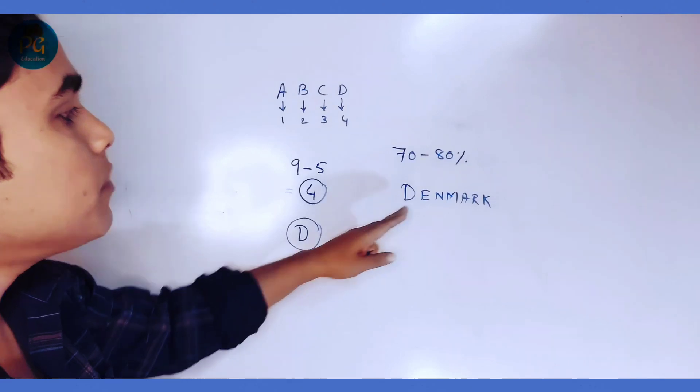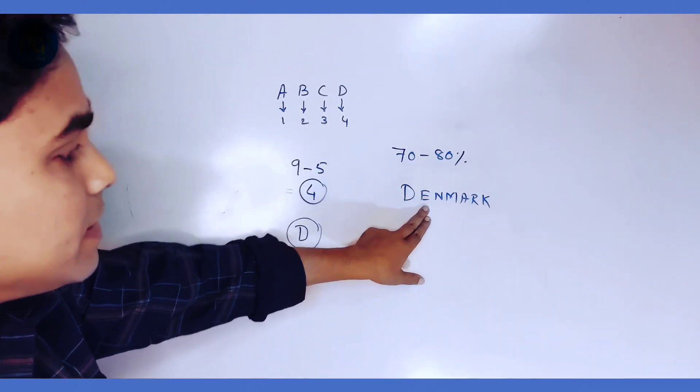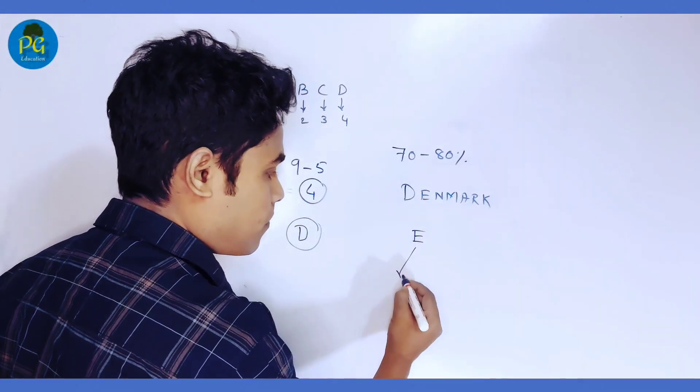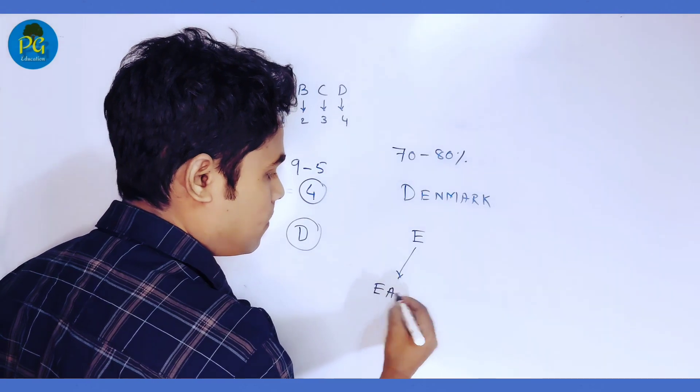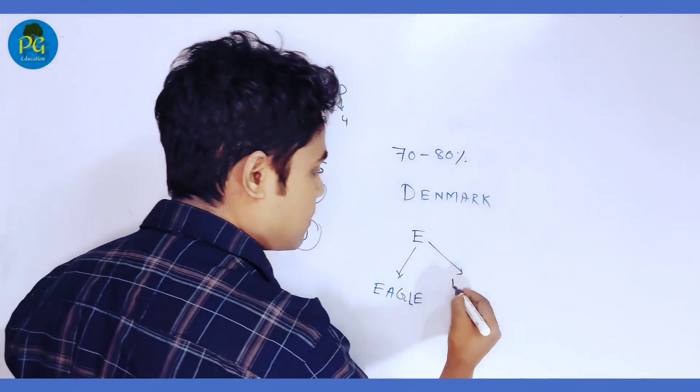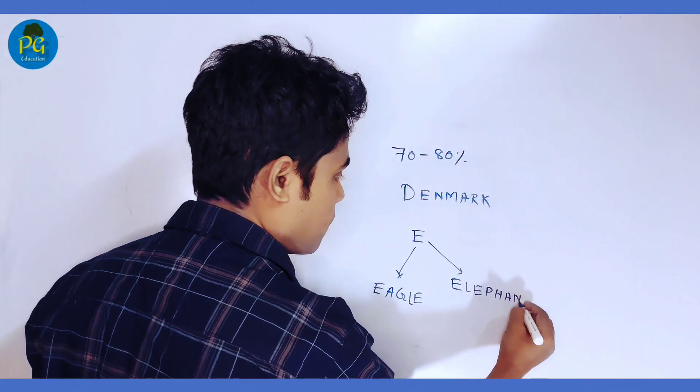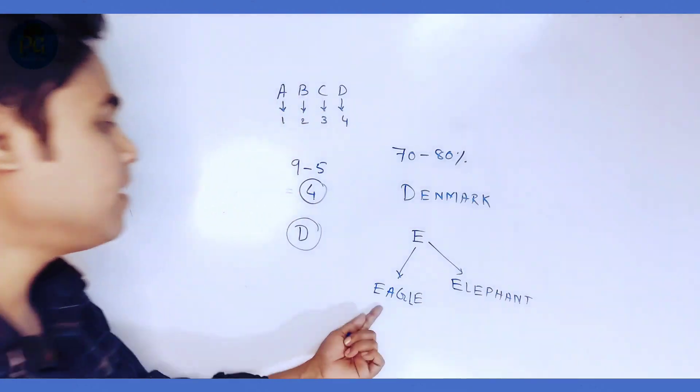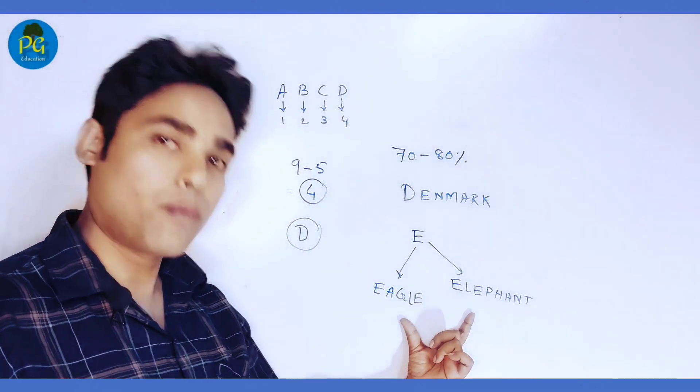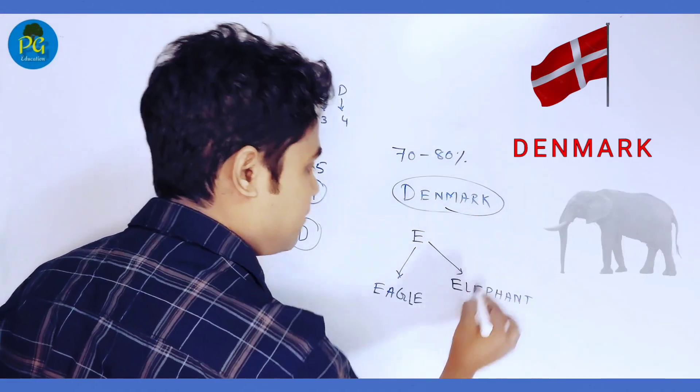Now, you have to think of an animal with the letter after D. So, after D, it is E. Many of you may choose Eagle, and some of you may choose Elephant. Why Eagle? Why Elephant? Because both of these names are quite common. But as the pre-calculated answers are Denmark and Elephant,